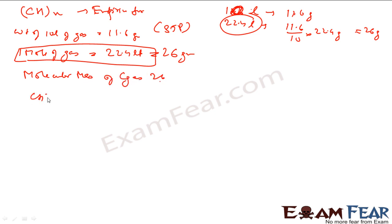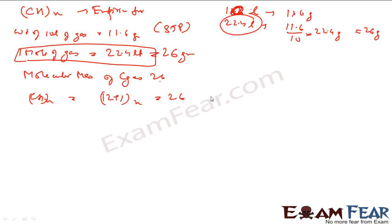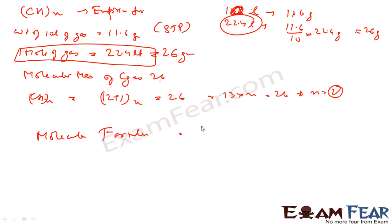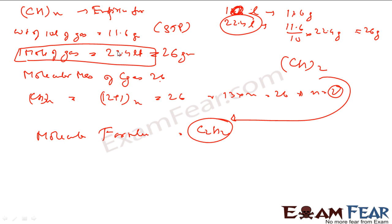I have the empirical formula CH, so (CH)n: carbon 12 + hydrogen 1, times n equals 26. That is 13n = 26, so n = 2. That means the molecular formula is C2H2. For 10 liters it is 11.6 grams, giving molecular mass 26, and with that I can confirm the formula is C2H2.